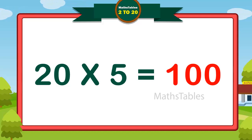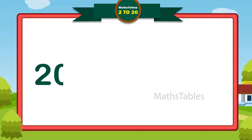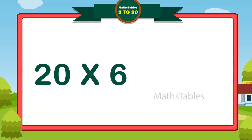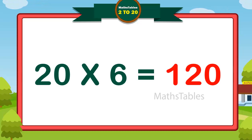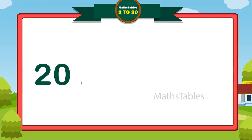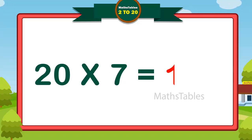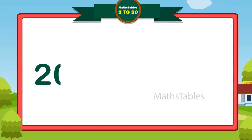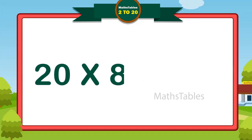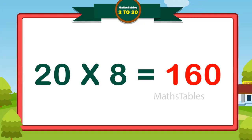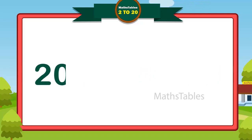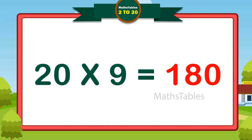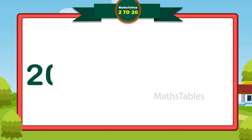20×5 is 100, 20×6 is 120, 20×7 is 140, 20×8 is 160, 20×9 is 180, 20×10 is 200.